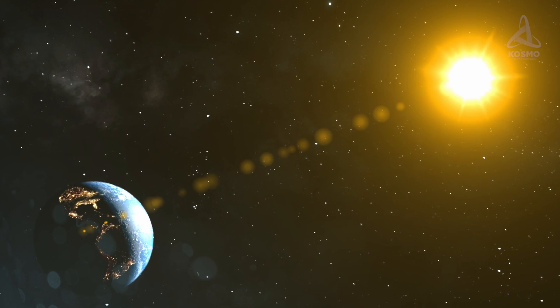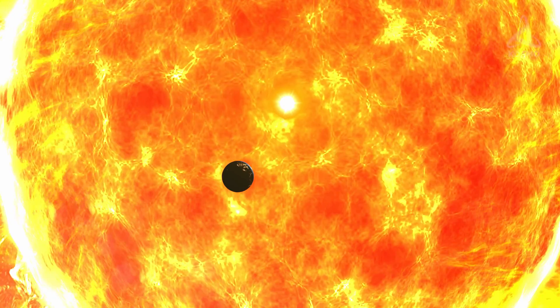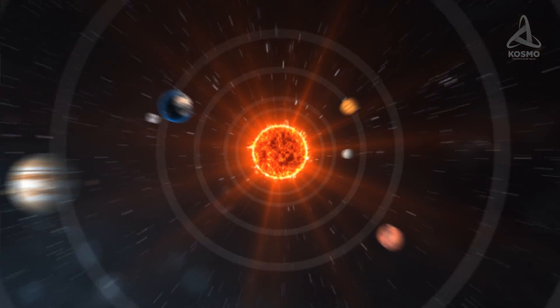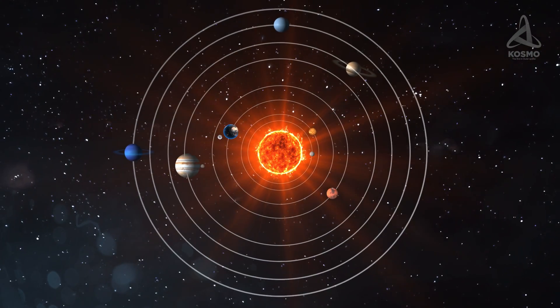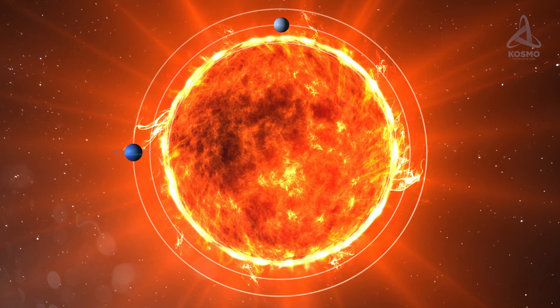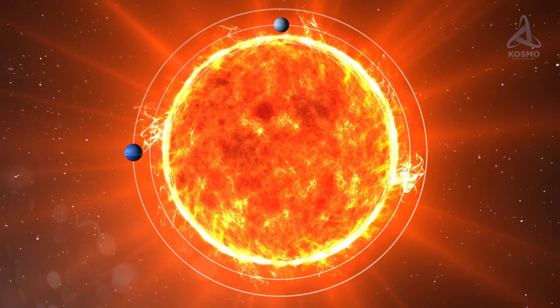This means that the supergiant's volume should be about 10 billion times that of the sun. Placed in the center of the solar system, Stevenson 2-18 would easily swallow up Saturn, along with all of its rings and moons, to say nothing of the terrestrial planets.